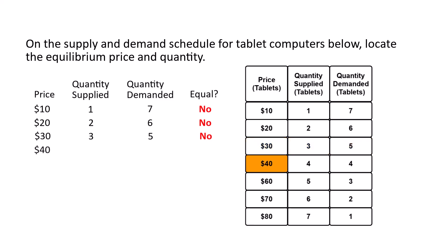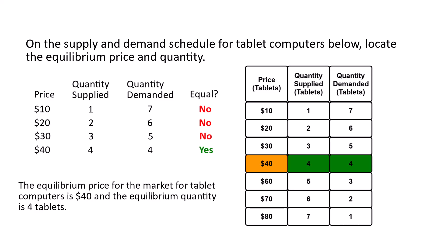Next, move down a row to the price of $40 per tablet. At a price of $40 per tablet, the quantity supplied is four tablets and the quantity demanded is four tablets. So the quantity supplied and the quantity demanded are equal — the quantity supplied of four tablets equals the quantity demanded of four tablets. So the equilibrium quantity for the market is four tablets. To find the equilibrium price, read the price column where the quantity demanded equals the quantity supplied. The price where they are equal is $40, so the equilibrium price is $40. The equilibrium quantity for the tablet market is four tablet computers and the equilibrium price is $40 per tablet.